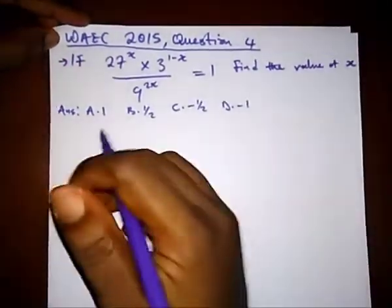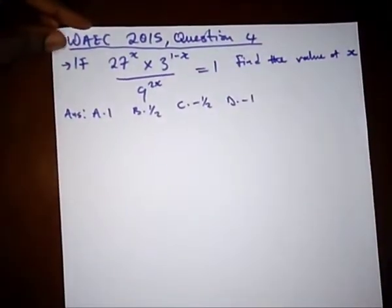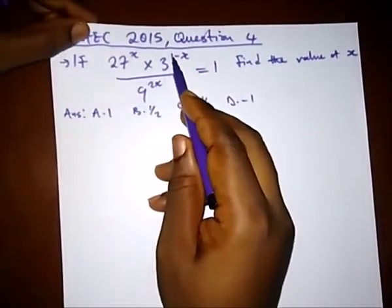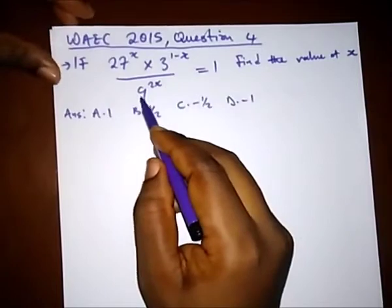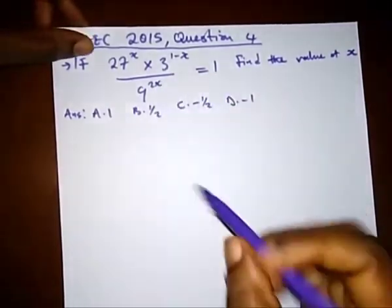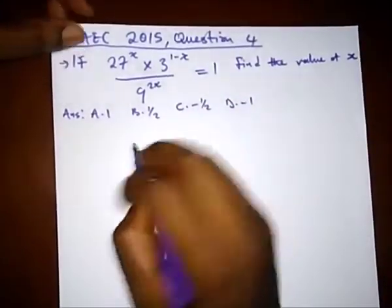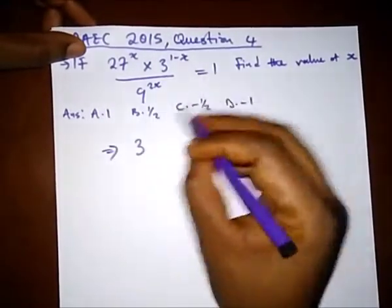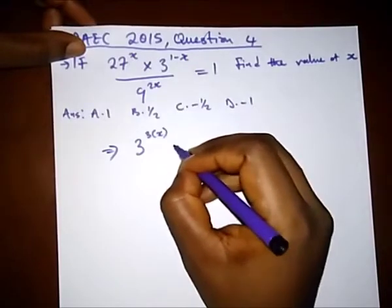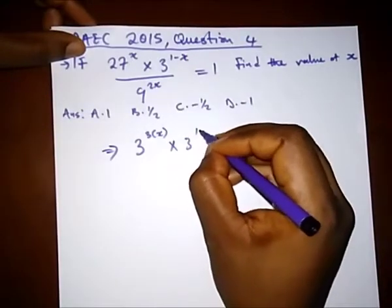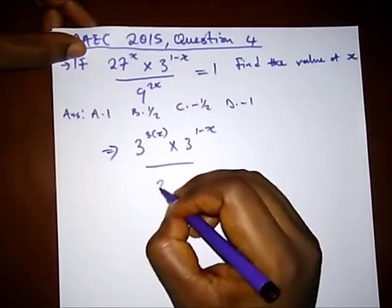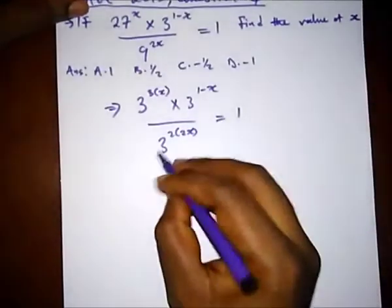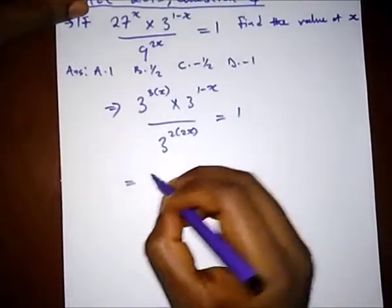Here we have another question from WAEC 2015 question 4. It says: if 27^x multiplied by 3 raised to the power 1 minus x, divided by 9 raised to the power 2x, equals 1, find the value of x. So we convert to base 3: we have 3^(3x) multiplied by 3^(1−x), over 3^(2×2x) equal to 1.